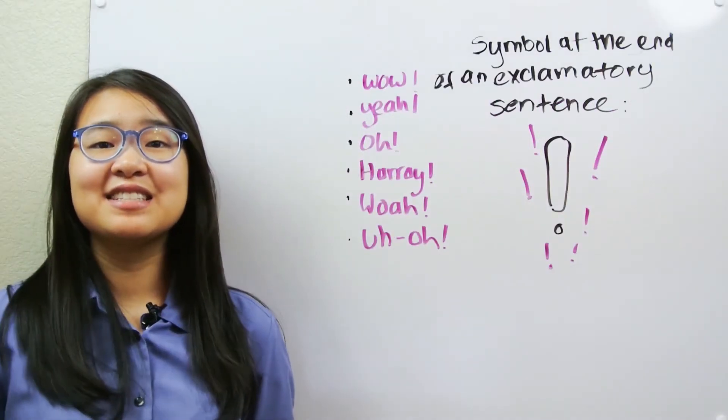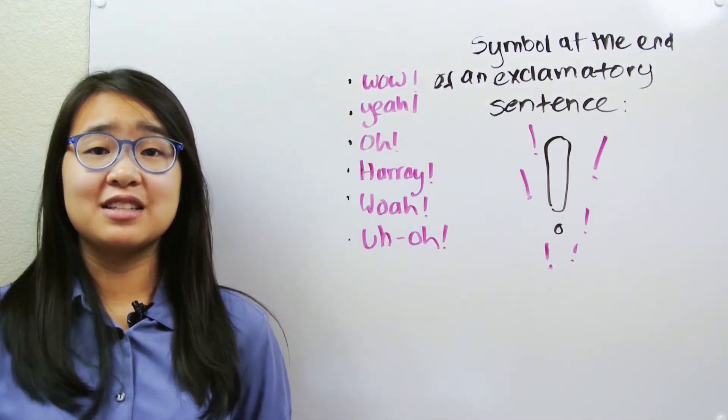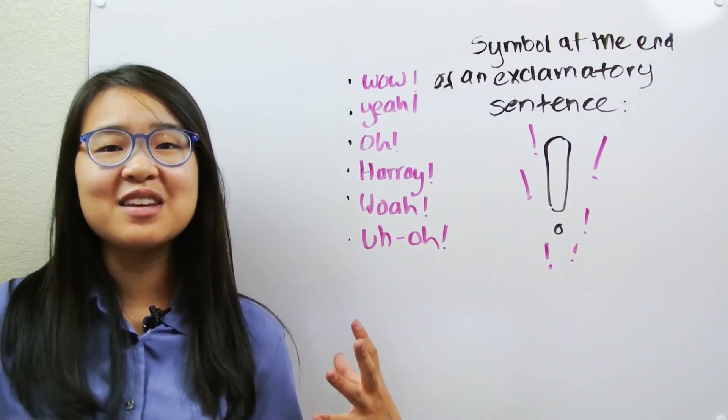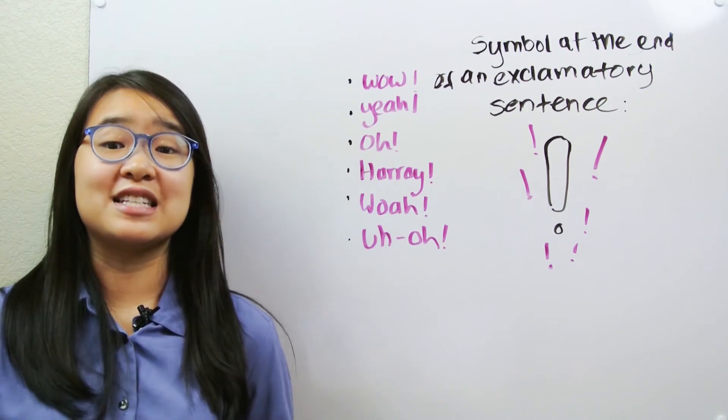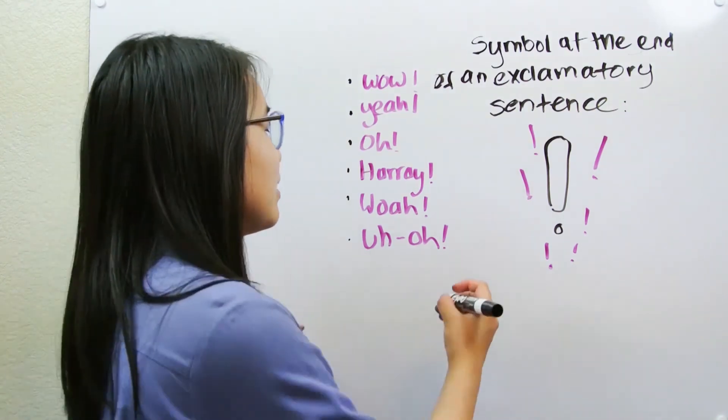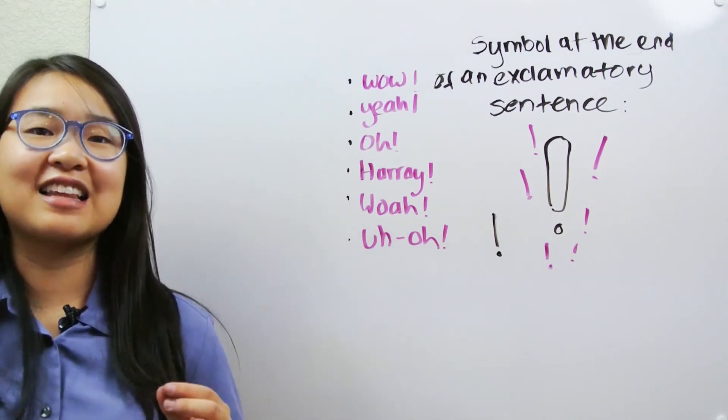You now know that sentences can be statements or they can be questions. There is another type of sentence. This is a sentence you might use if we are excited about something or are exclaiming something. It is called an exclamatory sentence. And this is the symbol that we use at the end of an exclamatory sentence. It is called an exclamation mark.